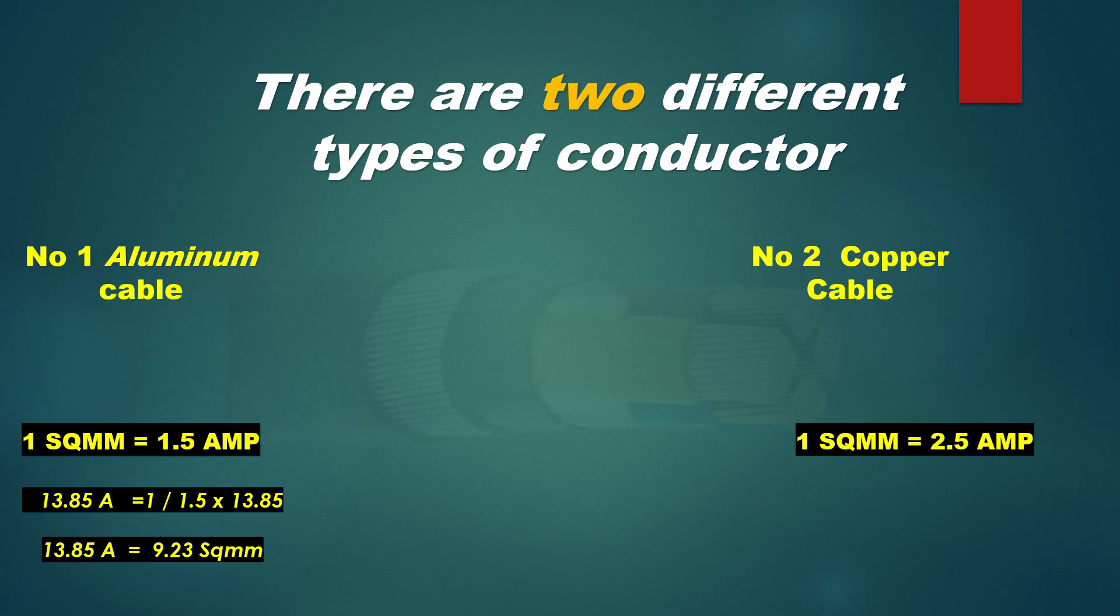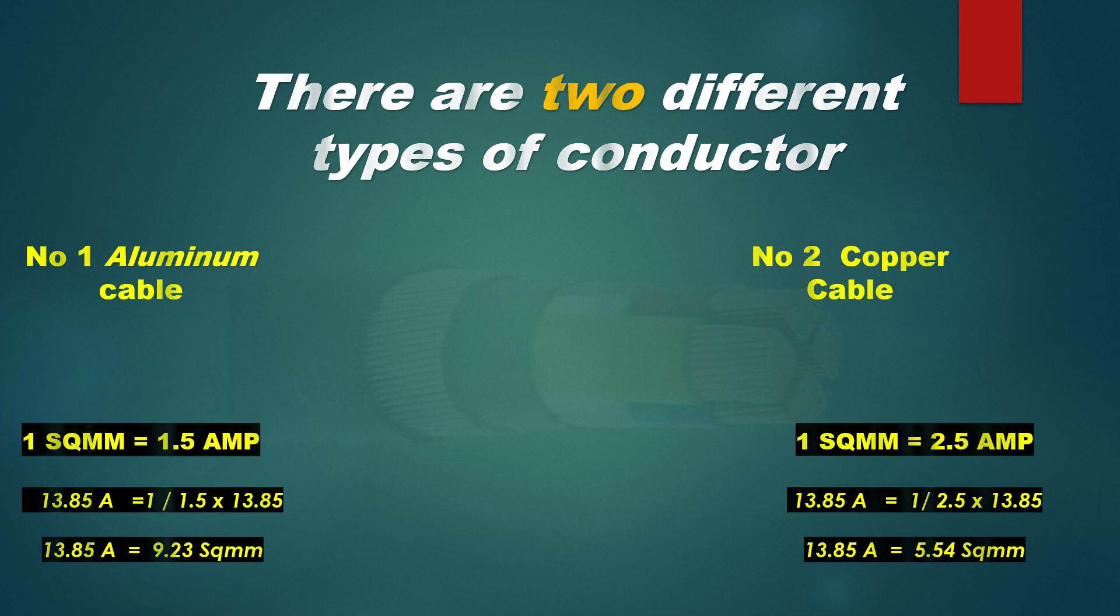Now, 1 square mm is equal to 2.5 ampere. 1 divided by 2.5 multiplied by 13.85 is equal to 5.54 square mm.